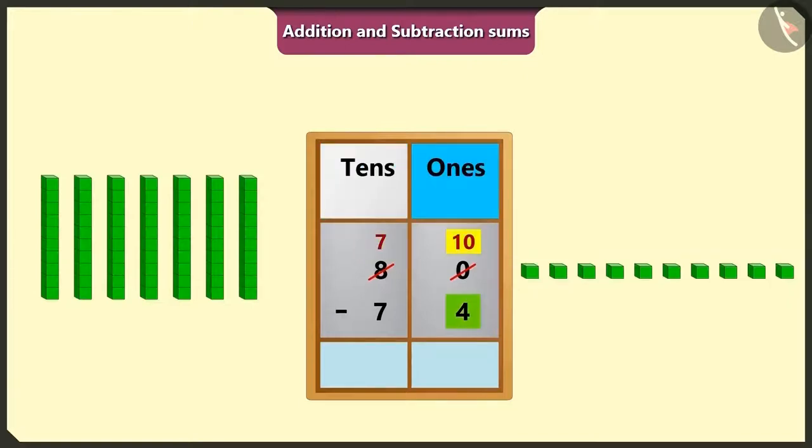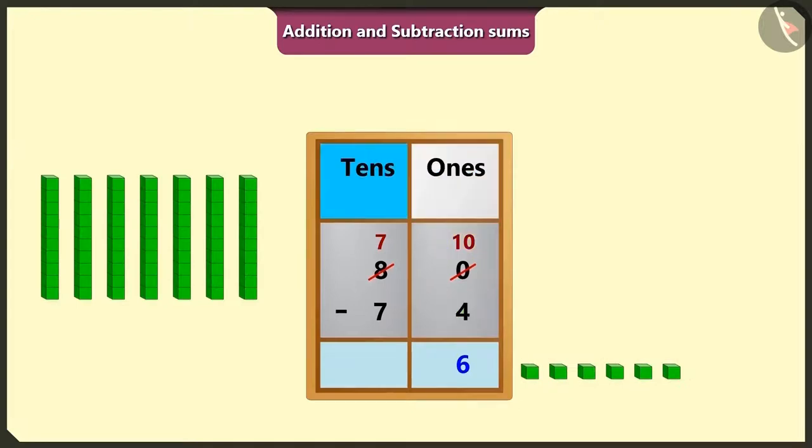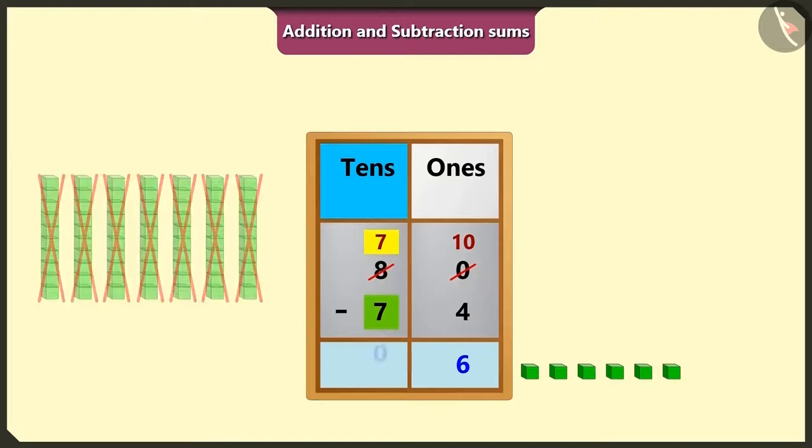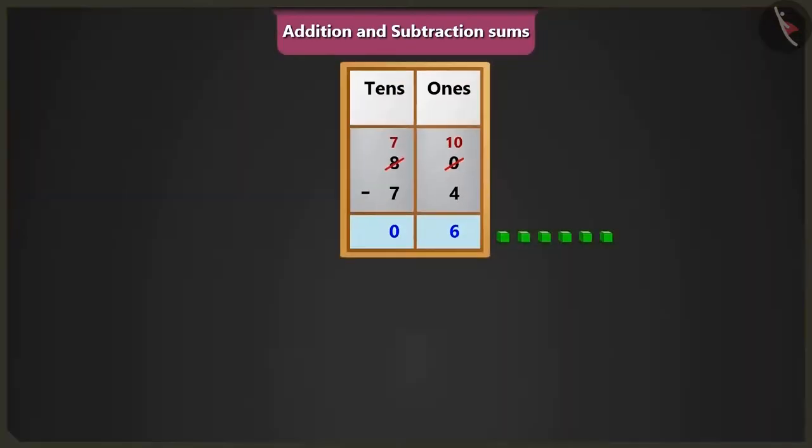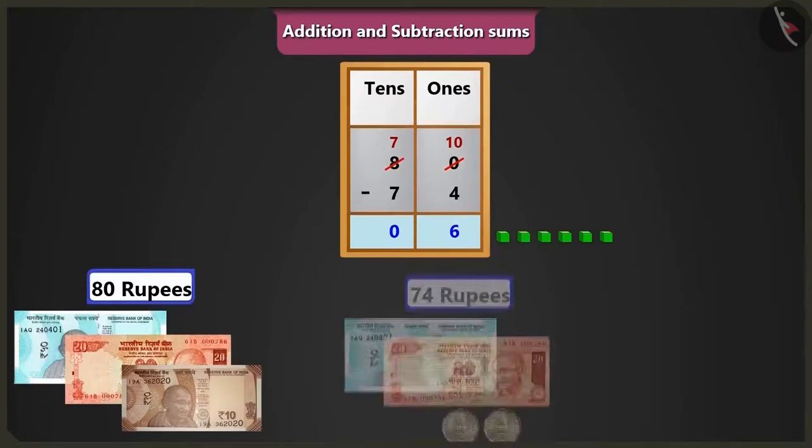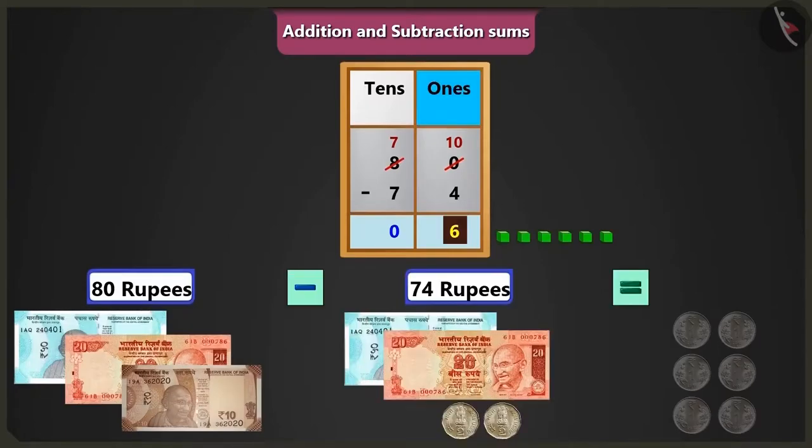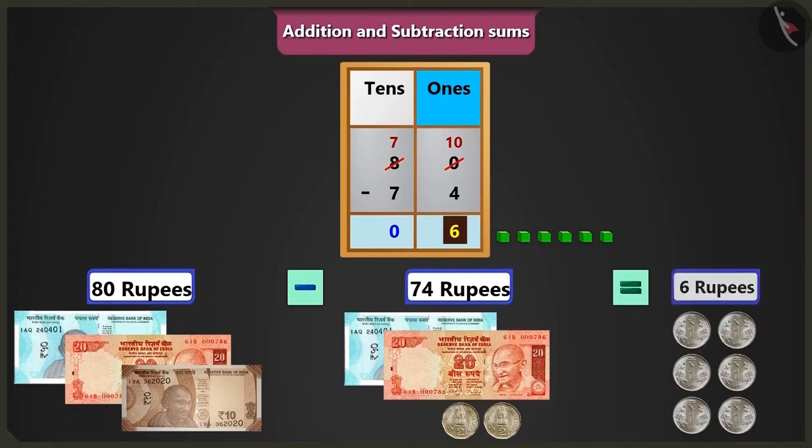Now if we will subtract four ones from ten ones, it will be one, two, three, four, five and six ones left. And if we will subtract seven tens from seven tens, it will be zero left in the box of tens. Yes. So in this way, if we will subtract 74 rupees from 80 rupees, it will be six ones means six rupees will be left.